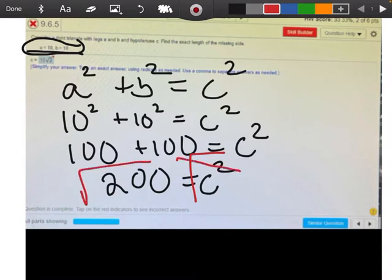The square and the square root are going to cancel each other out. So I'm just going to be left with C equals the square root of 200.